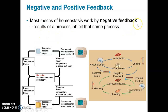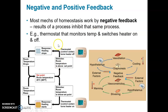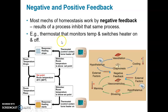With a negative feedback mechanism, the results of the process will inhibit that same process. A good example you can recognize from your home: you have a thermostat that sets the temperature. If the temperature drops, the thermostat turns on the heater, and as the temperature reaches the set point the thermostat switches off the heater.